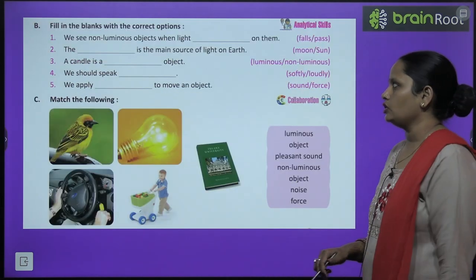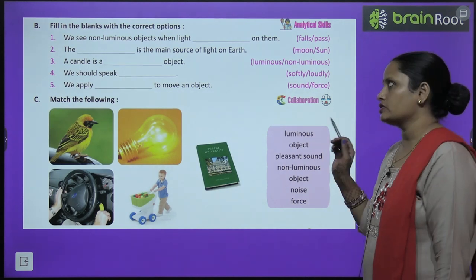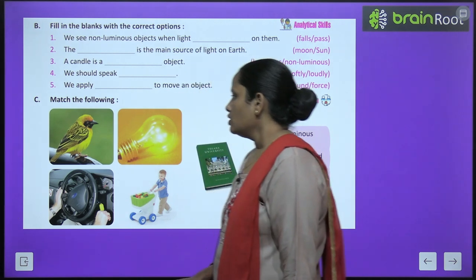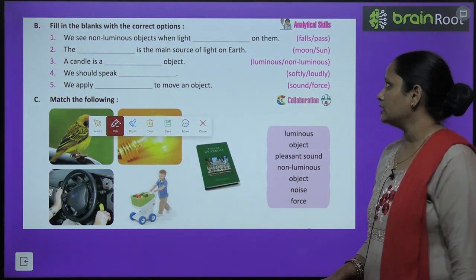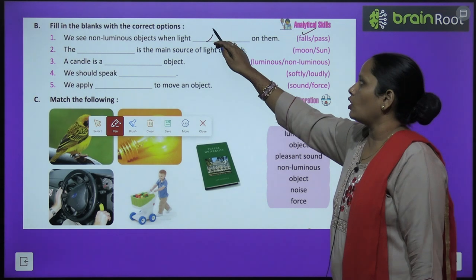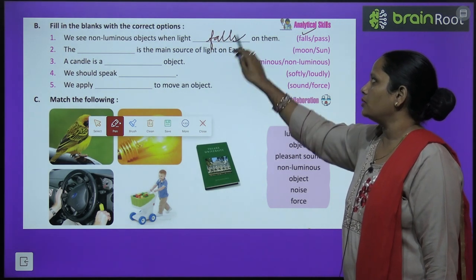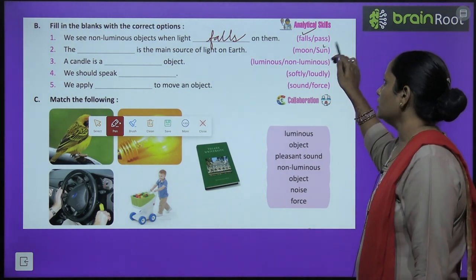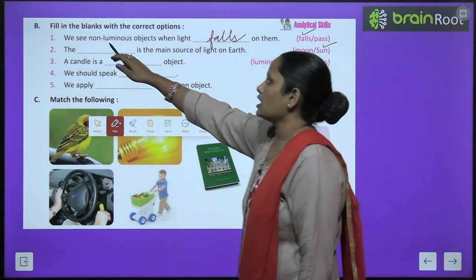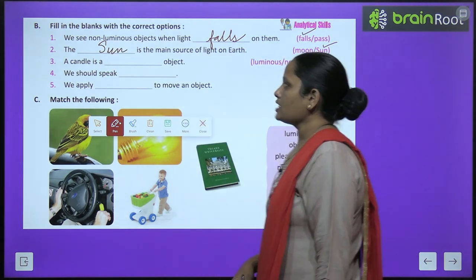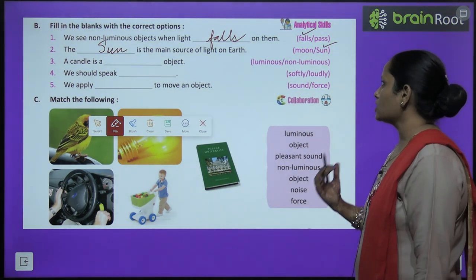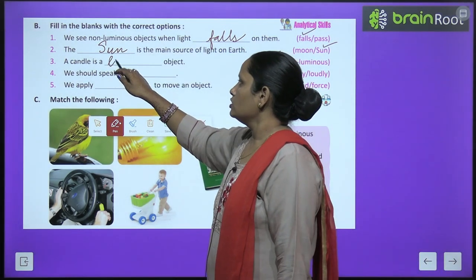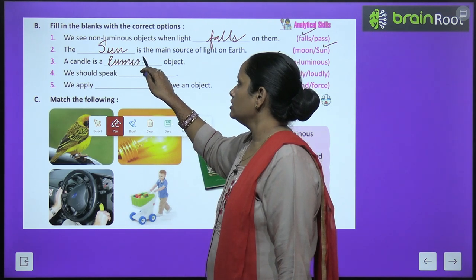Now let's move on to B exercise — fill in the blanks with the correct options. We see non-luminous objects when light falls on them. The sun is the main source of light on earth. A candle is a luminous object.